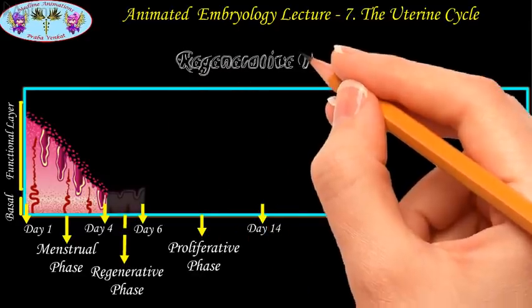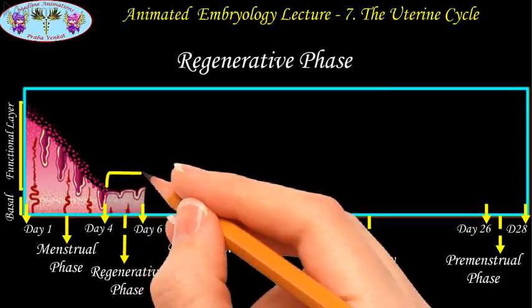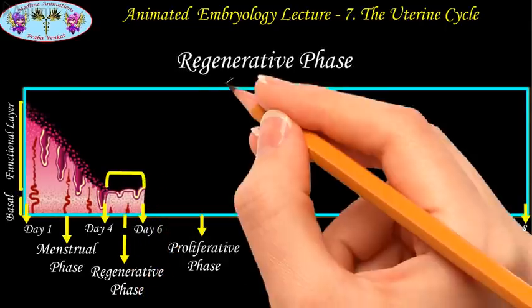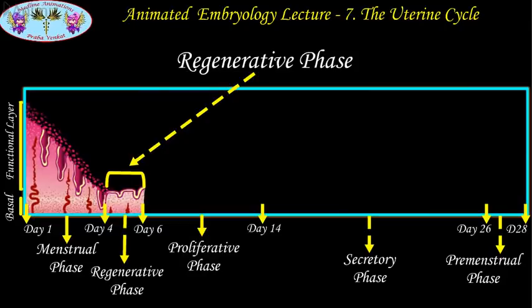The regenerative phase occurs on the fifth and sixth day. At the end of the destructive phase, the total functional layer is lost. The functional layer will once again be regenerated from the cells of the basal layer, covering the denuded surface of the mucous membrane.